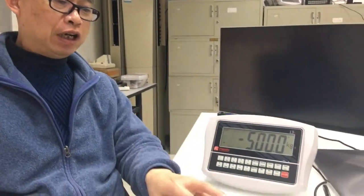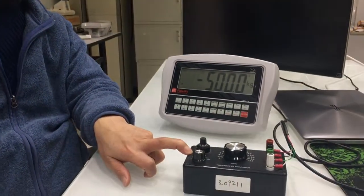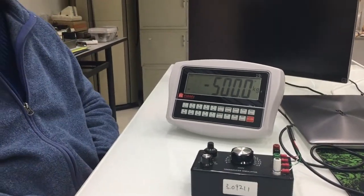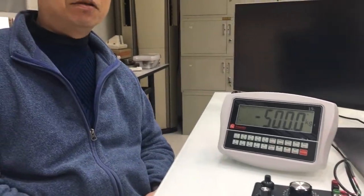I'm going to demonstrate this calibration method to you with our 1i indicator together with a load cell simulator. The setting of this indicator is 10,000 kilograms by 0.1 kilograms, that is 10,000 divisions.